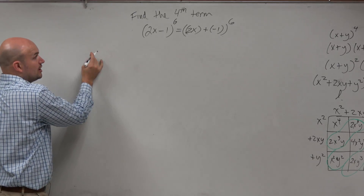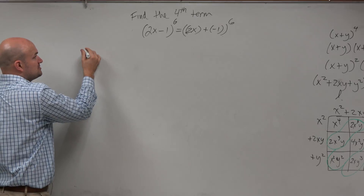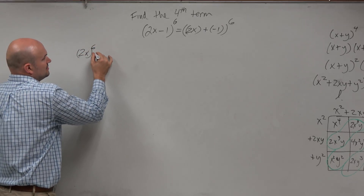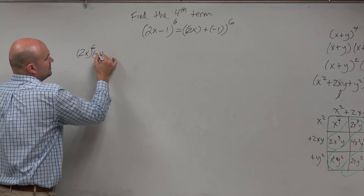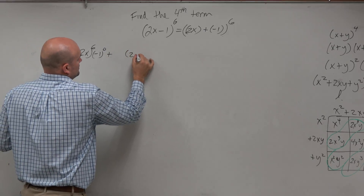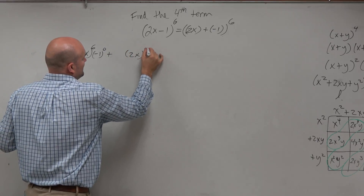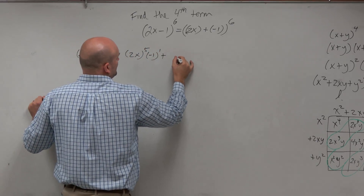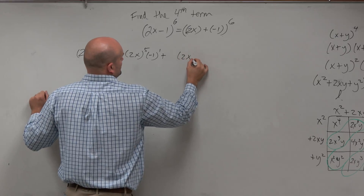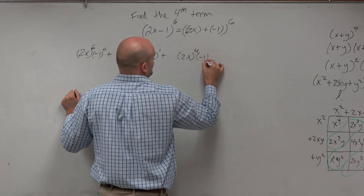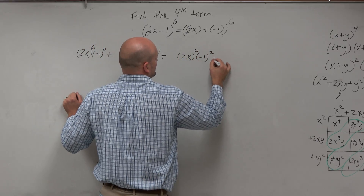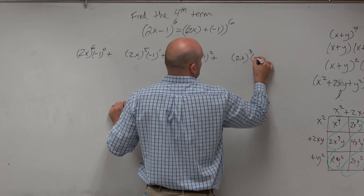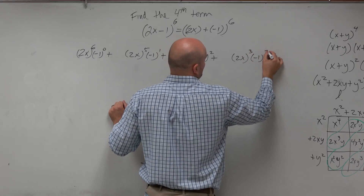So let's look at this. Just following our rules with the binomial expansion: 2x to the sixth, negative 1 to the zero, plus 2x to the fifth, negative 1 to the first, plus 2x to the fourth, negative 1 squared, plus 2x cubed, negative 1 cubed.